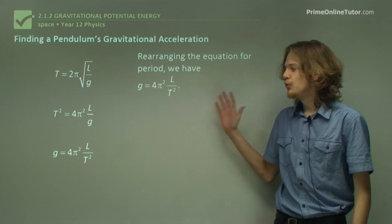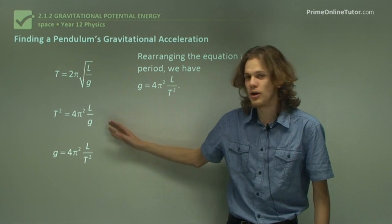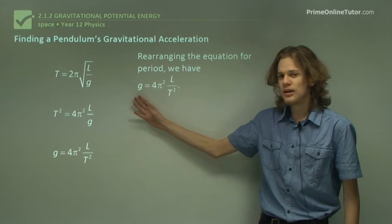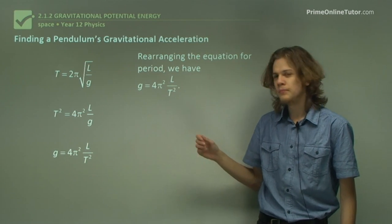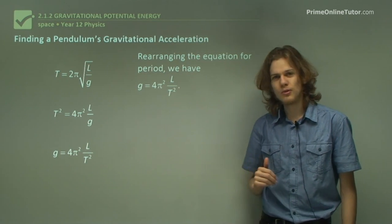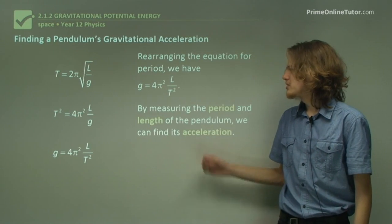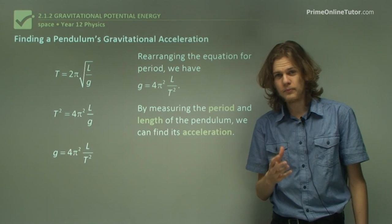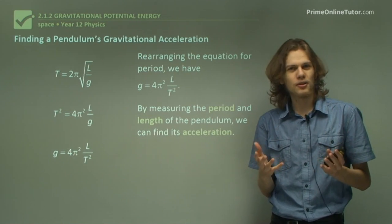So if we rearrange the equation, as we can see in this series of equations here, we'll end up with the gravitational acceleration equals 4 pi squared times the length of the pendulum over the period squared. That means that just by measuring the period and the length of the pendulum, we're able to determine the gravitational acceleration.